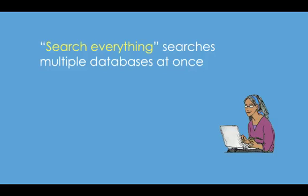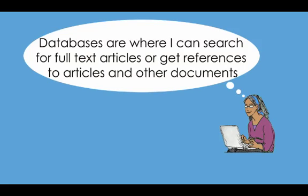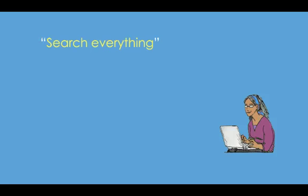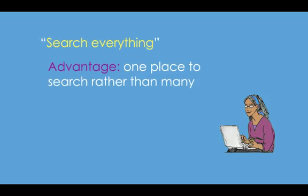What is Search Everything? It's a search engine that will search the Library's catalog as well as multiple databases at once. For the purpose of this tutorial, I'm going to assume you know what a database is. If not, please check the Library's help page for a definition. Search Everything's major advantage is that you can enter your search terms in one place rather than repeating the search in many different databases.